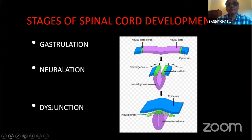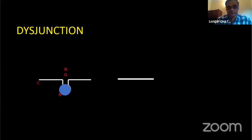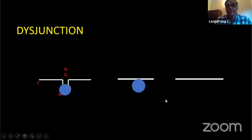Reviewing spinal cord development: there are three stages — gastrulation (forming a three-layered embryonic disc), neurulation (neural tube closure), and disjunction (separation of neuroectoderm from cutaneous ectoderm). Lipomas are particularly related to disjunction. In normal development, the neural tube forms and separates from the cutaneous ectoderm. In premature disjunction, the neural tube separates before it closes, allowing mesoderm to travel into the gap between cutaneous ectoderm and the still-open neuroectoderm.